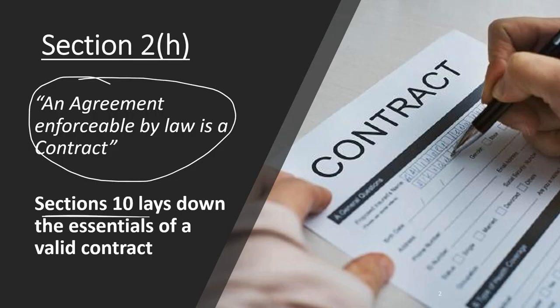So what is a contract? Section 2, subsection H of the Indian Contract Act 1872 says an agreement which is enforceable by law is a contract. That is what we understand — an agreement which is enforceable by law.